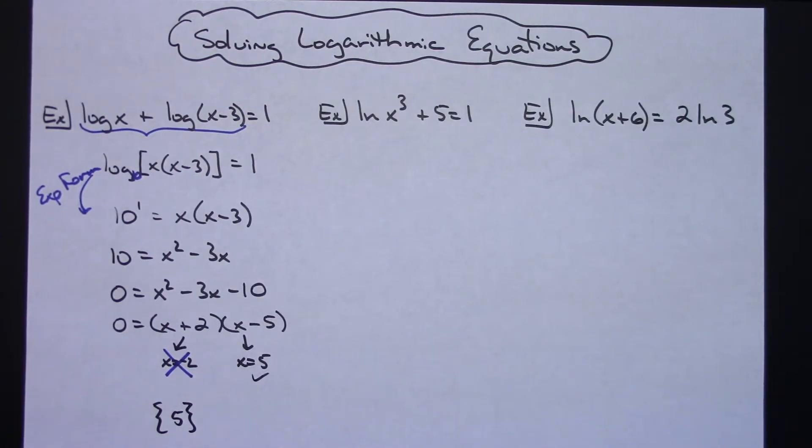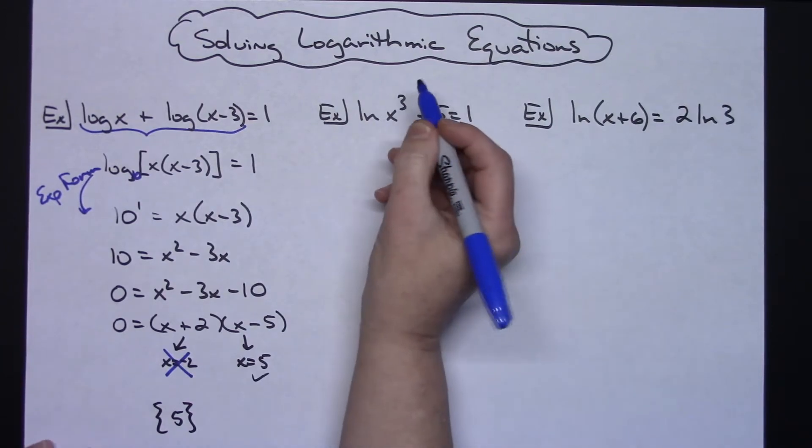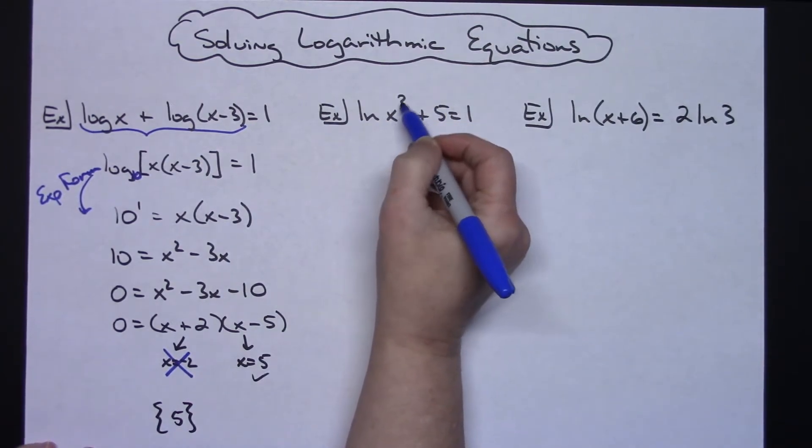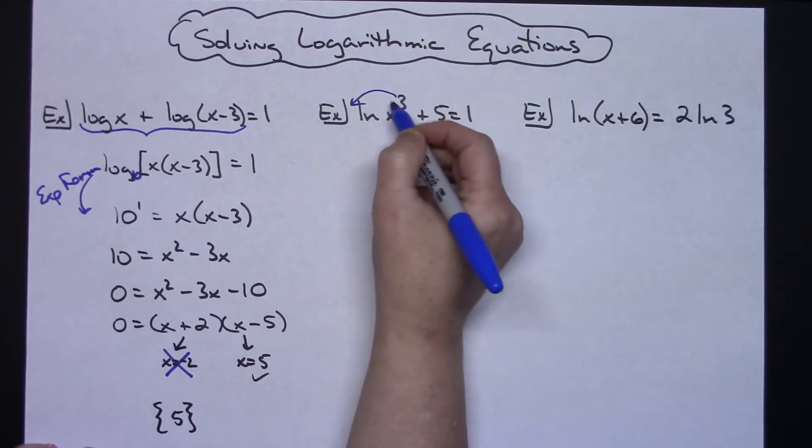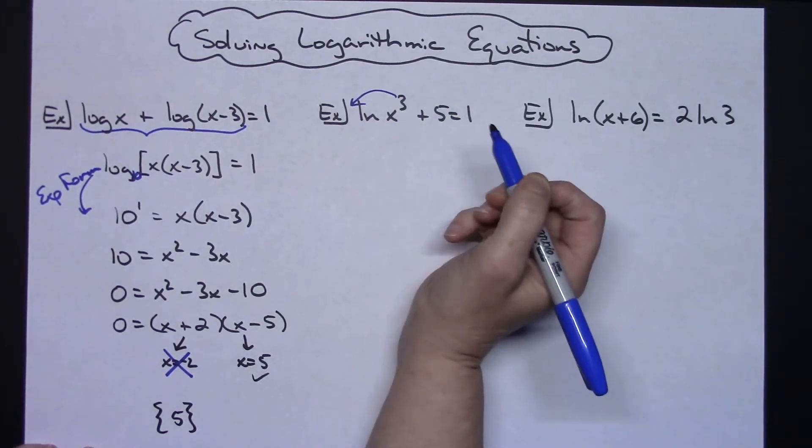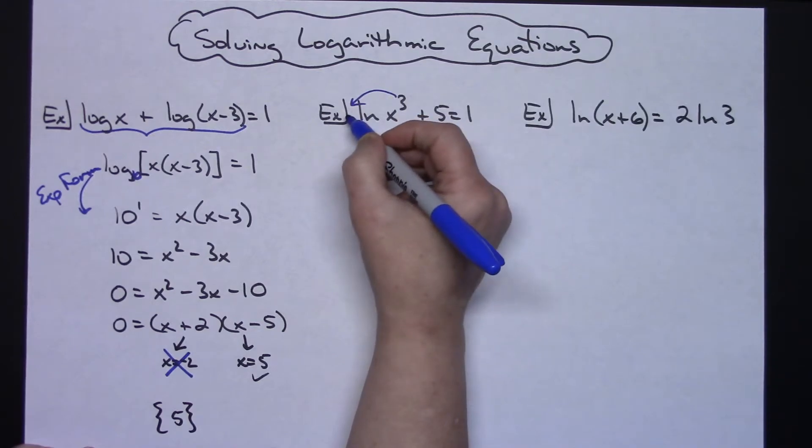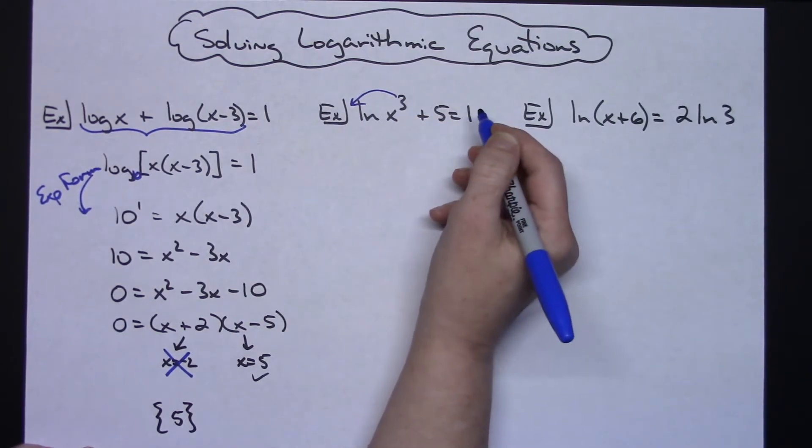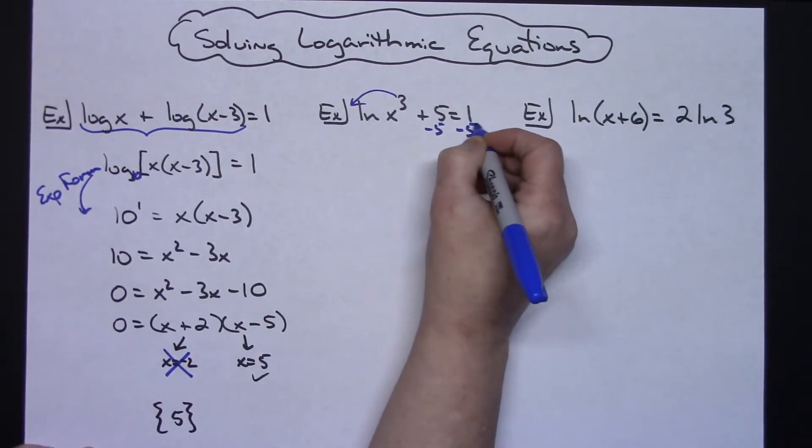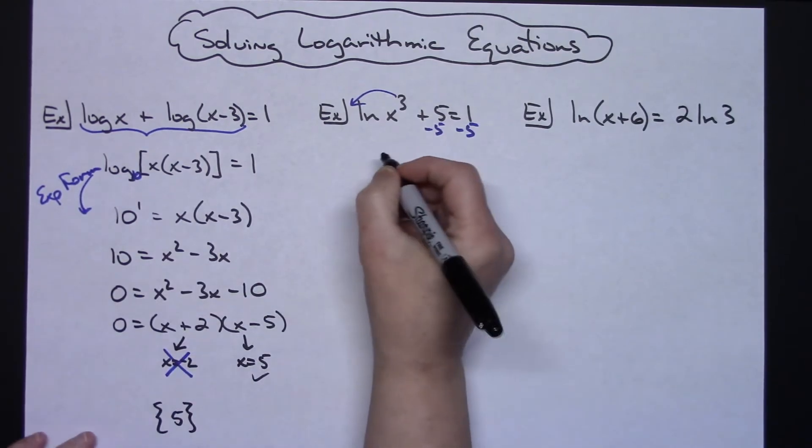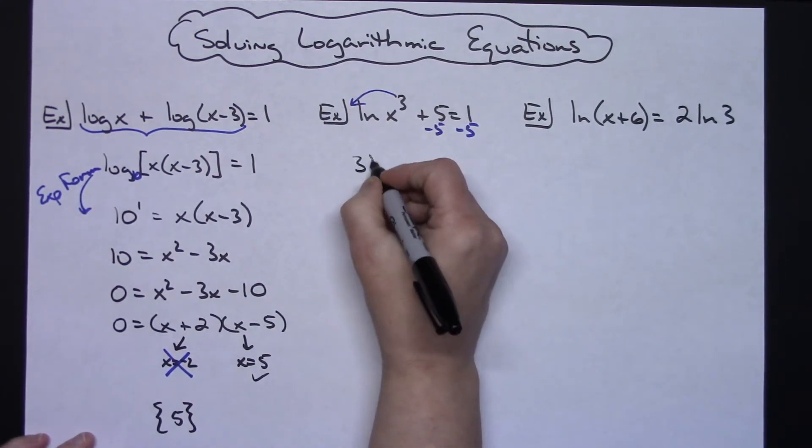For the second one I'm probably going to do two things all in my first step here. I've got the natural log of X to the third plus 5 equals 1, so I'm going to bring that 3 down in front. In my class I call that jumping the frog because I've got a log and something sitting up on top of that log. We refer to it as a frog so we jump the frog there and go ahead and subtract 5 from both sides of the equation all in that first step. So then I'm going to have 3 times natural log of X equals a negative 4.